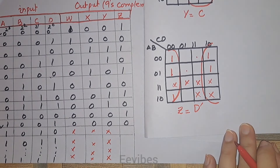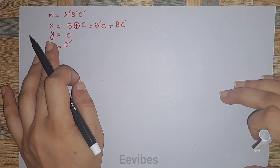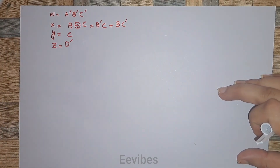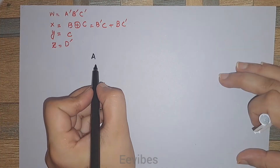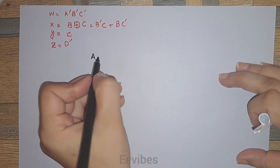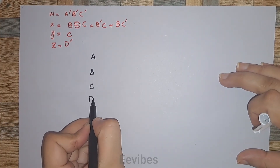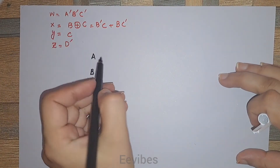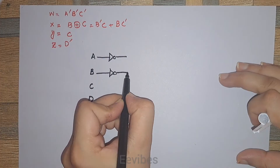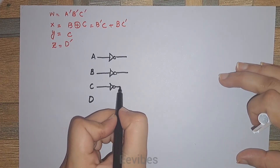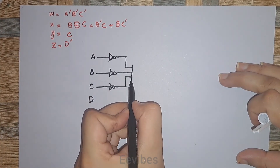We have now determined the expressions for outputs W, X, Y, and Z, where A, B, C, D are the input variables. Since W equals A complement·B complement·C complement, we apply an inverter before A, B, and C, and then AND these three terms together to generate the output function W.